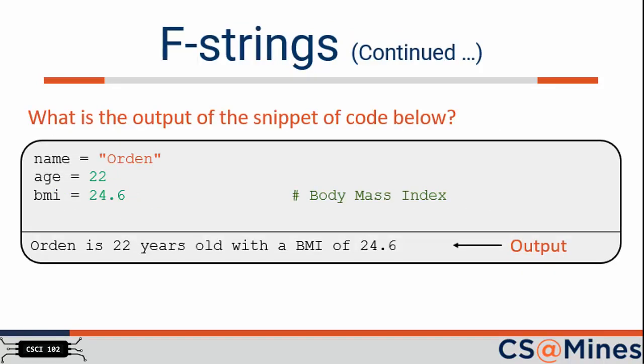Since we are nearing the end of our video, I'll leave you with a challenge. Consider our previous print Orden's age and BMI example. Write down what you think the print statement should look like if we used fstrings instead of the percent operator. And then code that up in idle to see if you are correct. Here's one piece of good news. Fstrings don't add trailing zeros to floating point numbers.